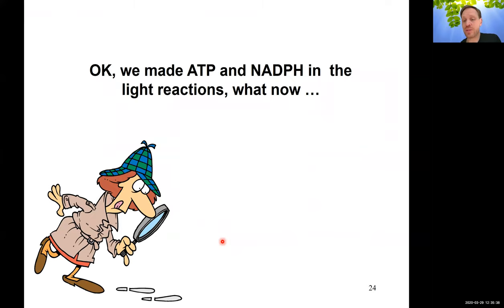This concludes our discussion on the light reactions — how we make ATP and NADPH. In the next video, we'll use that ATP and NADPH to see how the Calvin cycle actually makes sugars.